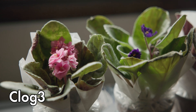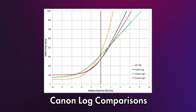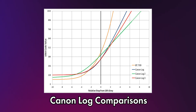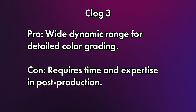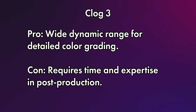Let's start with CLog3. CLog3 is a logarithmic gamma curve designed to capture a wide dynamic range, making it ideal for professional color grading in post-production. It retains more detail in highlights and shadows compared to profiles like Rec.709, and it's designed to give you maximum flexibility to adjust contrast, exposure, and color during editing. So if you're filming high contrast scenes like an outdoor wedding, CLog3 will help you retain details in both the highlights and the shadows.